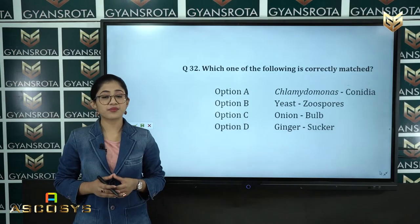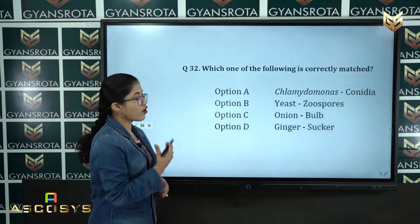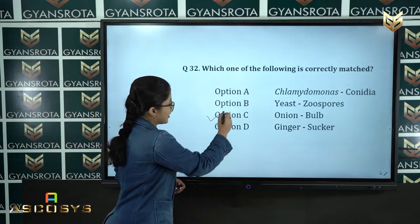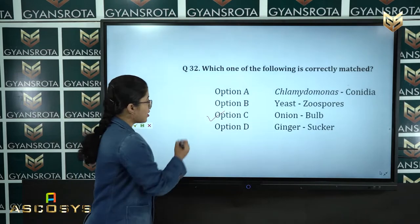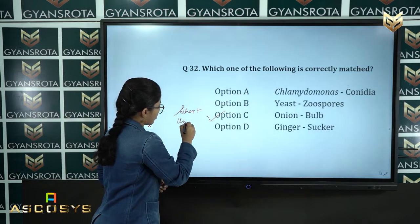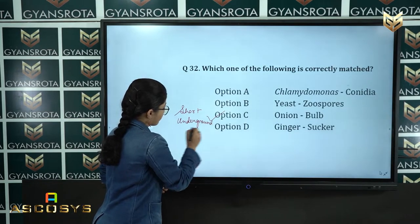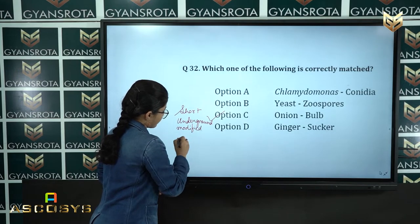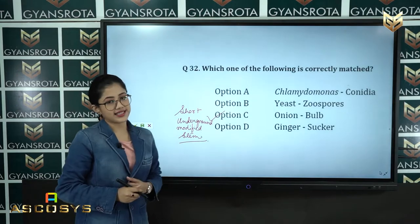This question is from the chapter Reproduction in Organisms. The correct answer is option C, onion bulb. Onion is a bulb which is a short underground modified stem.